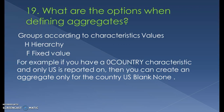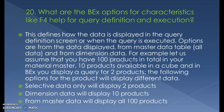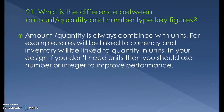What are the best options for characteristics like F4 help for query definition and execution? This defines how data is displayed in the query definition screen or when the query is executed. Options are: from selective data, from master data table, and from dimension table. For example, if you have 100 products in material master, 10 available in a cube, and 2 in BEx — selective data displays 2 products, dimension data displays 10 products, and master data displays all 100 products.